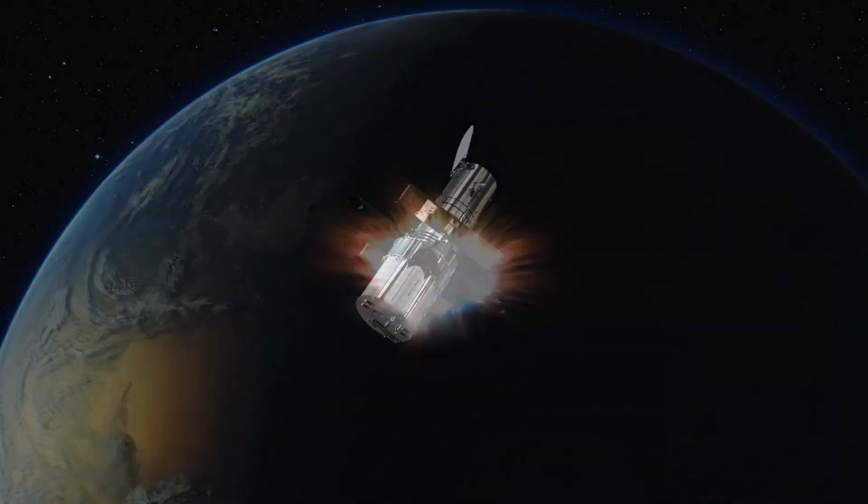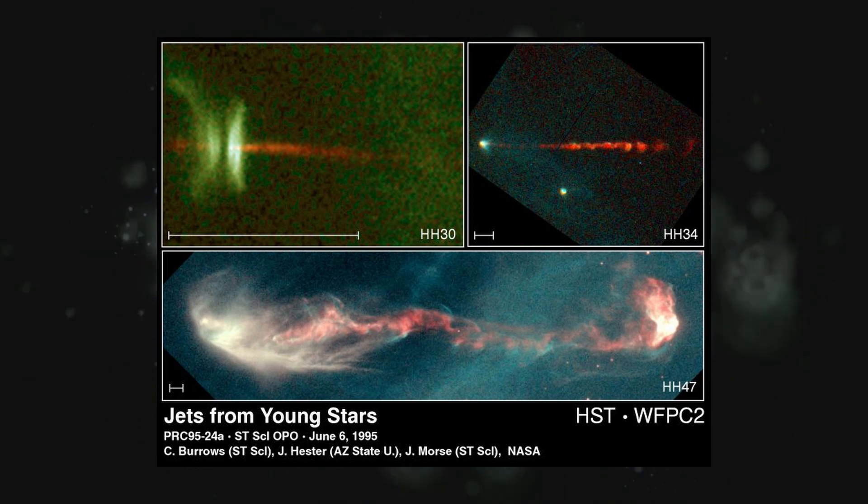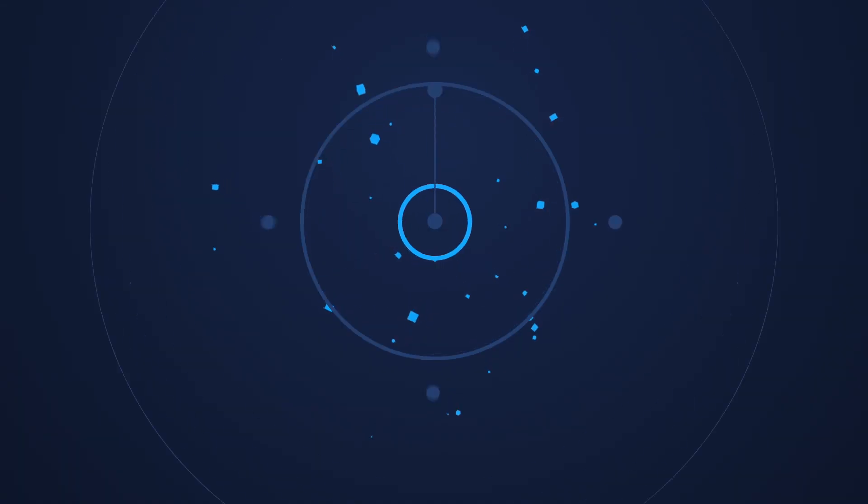The telescope has also observed gas jets flowing from immature stars, which are directed to the poles of the stars and fired in opposite directions via magnetic fields. By studying the changes of these jets over time, astronomers have obtained a better understanding of stellar formation. Number 1.